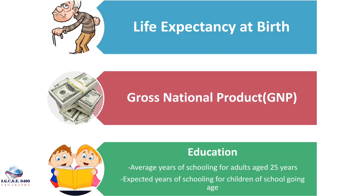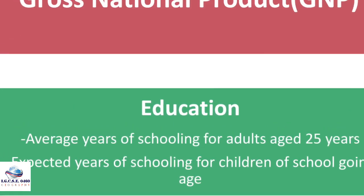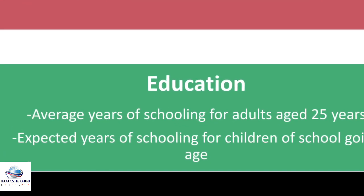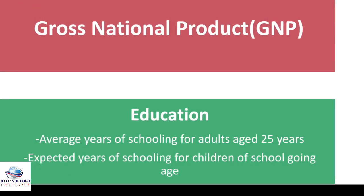The three indicators are: number one, life expectancy, which means the number of years a newborn baby is expected to live; number two, Gross National Product (GNP); and number three, education or literacy, which looks at two things — average years of schooling for adults aged 25 years, and expected years of schooling for children of school-going age.